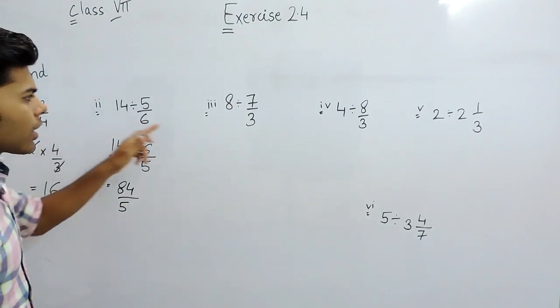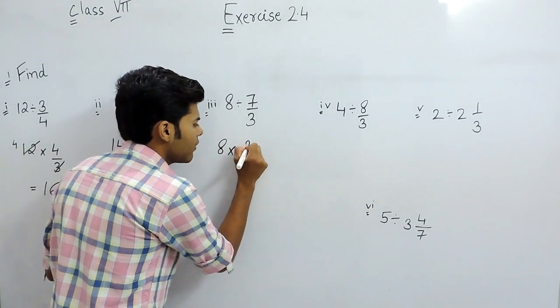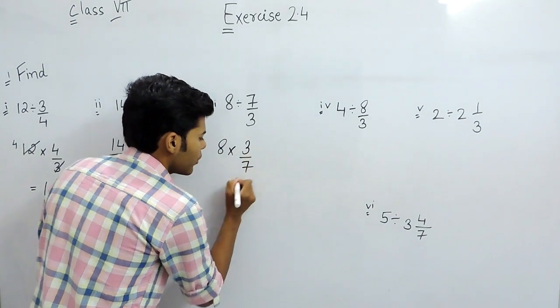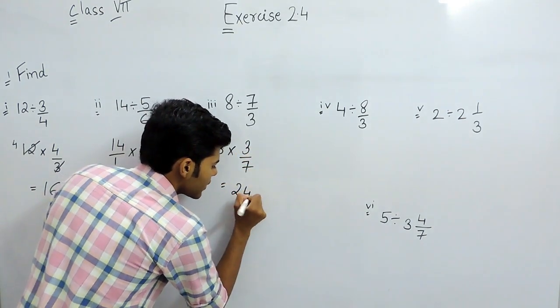Now the third part. Here also we will do the same thing: 8 multiplied with 3 by 7 and that will be 24 by 7.